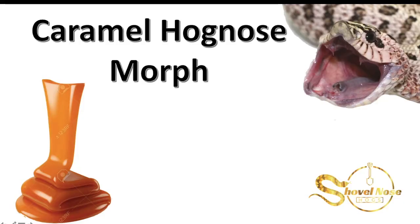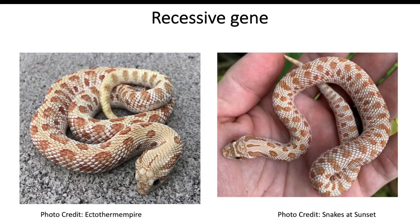Let's get started with this presentation of the caramel morph in hognose snakes. This is a recessive gene and it's very similar in looks to the toffee belly gene, but one of the distinguishing characteristics of the caramel gene is the reduced head stamp, which you can really see in the snake on the left-hand side.